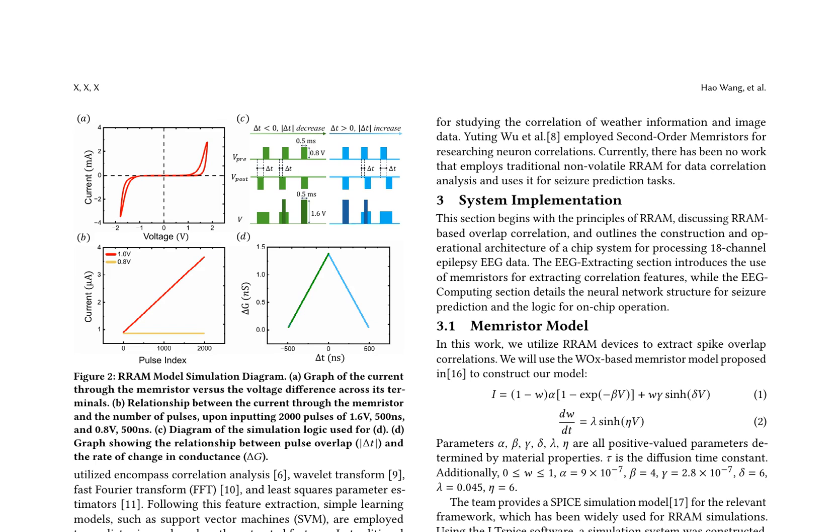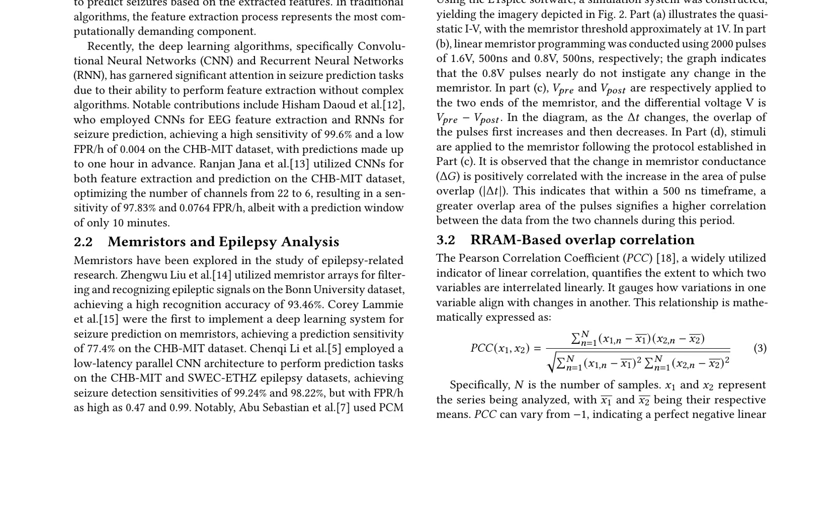In terms of system implementation, the principles of RRAM are based on the concept of resistive switching, where the resistance of the memristor can be altered by applying electrical pulses. The memristor model used in this study is based on the well-known Simmons-Bednorz model, which describes the electrical properties of thin film devices. The RRAM-based overlap correlation method proposed in this paper utilizes the Pearson correlation coefficient to quantify the linear correlation between variables. This statistical measure is essential for understanding the relationship between the input and output signals in the RRAM system, helping researchers to optimize its performance and reliability. Overall, the paper presents a comprehensive analysis of the RRAM model simulation and its potential applications in neuromorphic computing. By detailing the technical aspects of the model, the implementation principles, and the correlation method used, the research provides valuable insights for experts in the field.